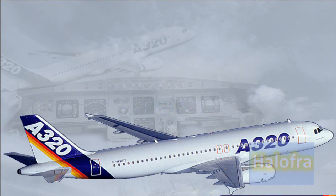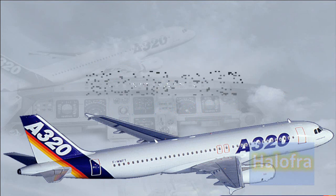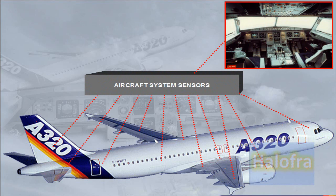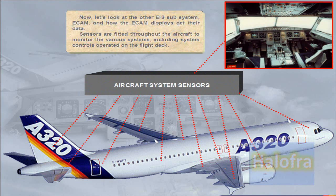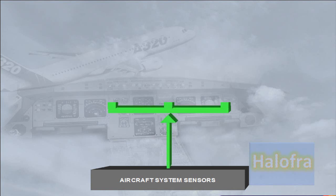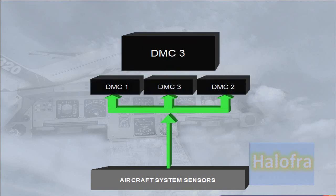Now let's look at the other EIS subsystem, ECAM, and how the ECAM displays get their data. Sensors are fitted throughout the aircraft to monitor the various systems, including system controls operated on the flight deck. Data for certain parameters, for example fuel quantity and primary engine indications, is routed directly from the system sensors to the three DMCs.